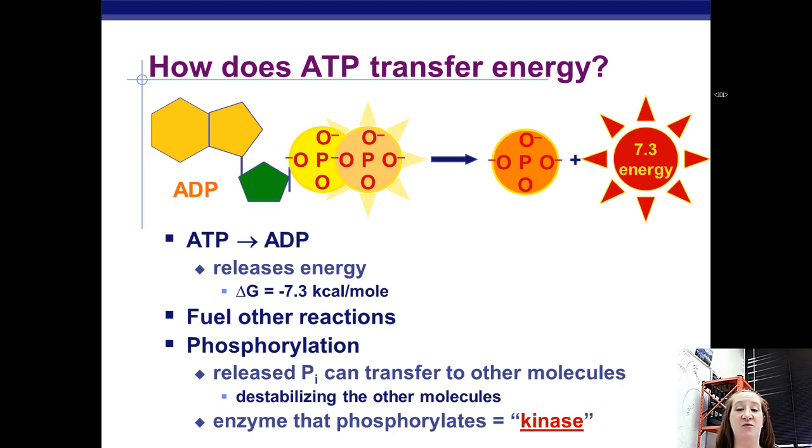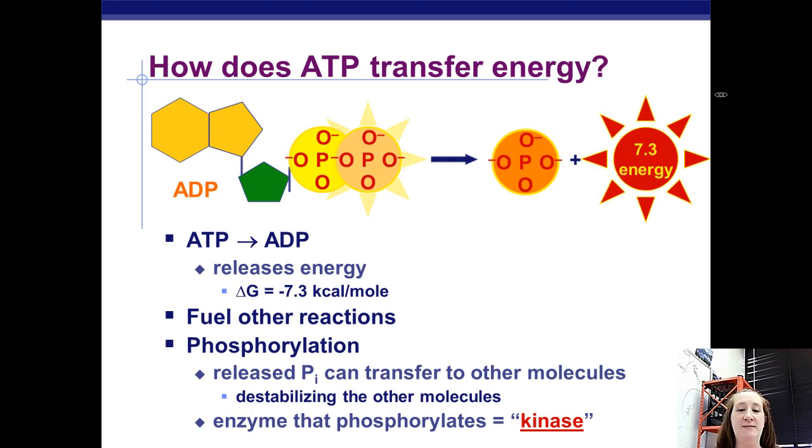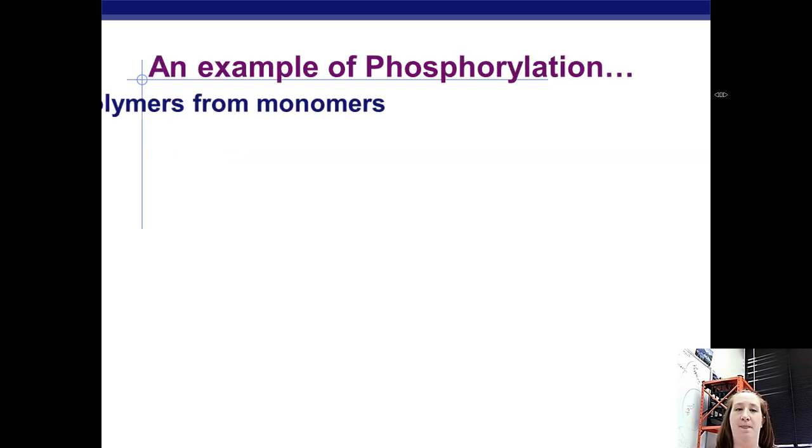The enzymes that phosphorylate, that take these phosphate groups, the enzymes that take these phosphate groups and stick them onto molecules, we call them kinases. So if you ever hear about a kinase enzyme, you'll know that it's talking about an enzyme that puts phosphate groups onto molecules from ATP.